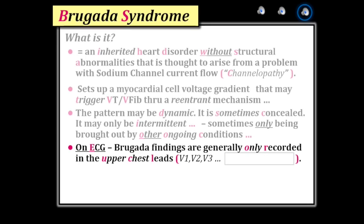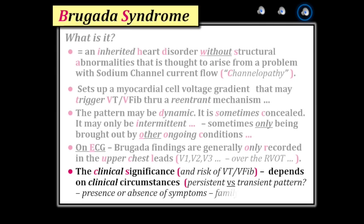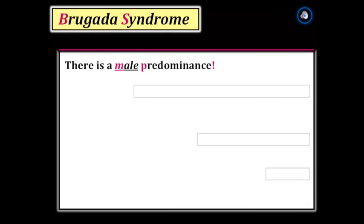Abnormalities are best seen — and often only seen — in the upper chest leads, which overlie the right ventricular outflow tract, corresponding anatomically to the location of the abnormal voltage gradient. The risk of VT or V-fib depends on a series of factors, including whether the Brugada ECG pattern is spontaneous and persistent versus intermittent or induced by transient conditions, whether the patient is symptomatic with syncope, and family history of sudden death or unexplained syncope at an early age. Clinical expression has a male predominance.